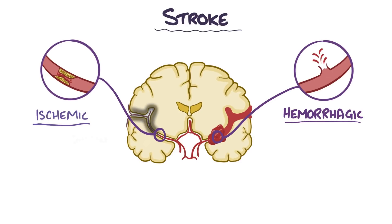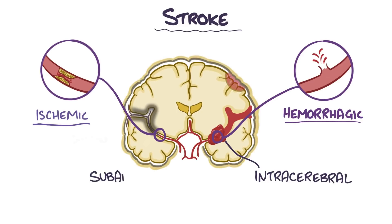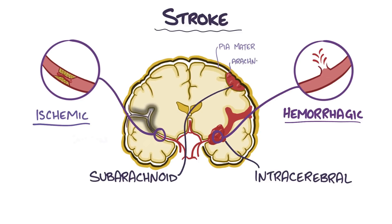Hemorrhagic strokes can be further split into two types: an intracerebral hemorrhage, which is when bleeding occurs within the cerebrum, and a subarachnoid hemorrhage, which is when bleeding occurs between the pia mater and the arachnoid mater of the meninges — the inner and middle layers that wrap around the brain. We'll focus on the subarachnoid hemorrhage, which can quickly lead to death if left untreated.